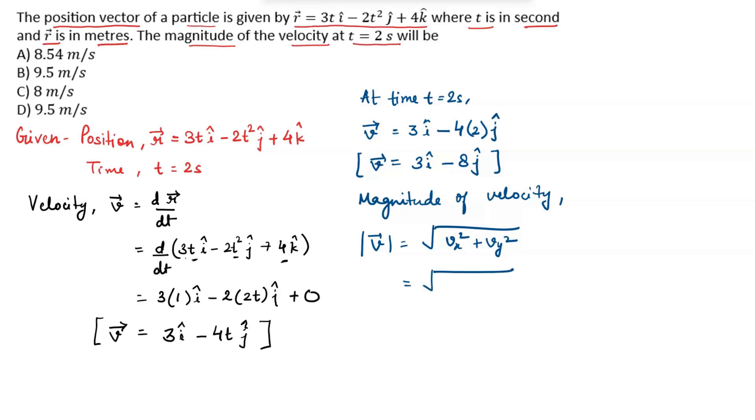Now, substituting the values v_x is given as 3, 3 squared plus v_y is minus 8. So, minus 8 squared. Now, solving this, 3 squared gives 9 plus minus 8 squared gives 64. This gives square root of 73 or we can write square root of 73 gives 8.54 meters per second. This is the value for magnitude of velocity.